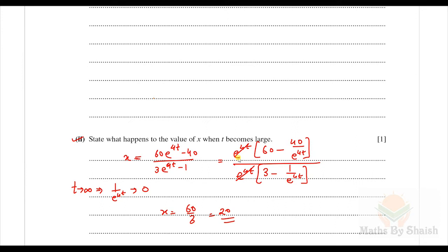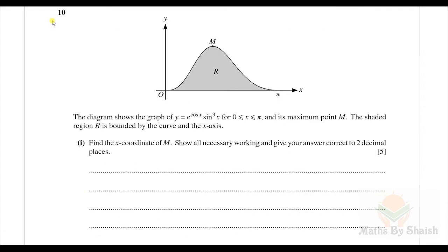So when t becomes large, x approaches 20. Now here's question number 10. The diagram shows the graph of y = e^(cos x) · sin³x for x between 0 and π, with maximum point M. The shaded region R is bounded by the curve and the x-axis. We need to find the x-coordinate of M.